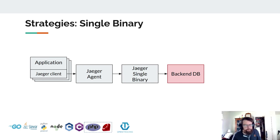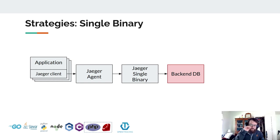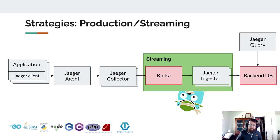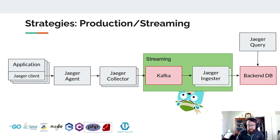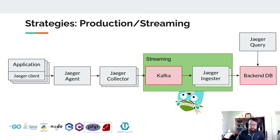All-in-one deploys a single binary that by default stores all of your traces in memory — so if you roll the pod your traces disappear, but you can deploy an optional backend database. Your application through the client talks to the agent, the agent pushes spans to the single binary which stores them in memory. For the production and streaming options, you have a set of services deployed by the operator that you can scale independently. In the streaming option, kafka and a Jaeger ingester are included, and a backend database is used.